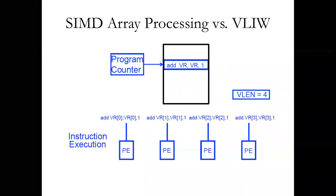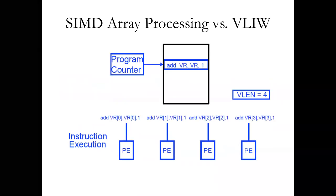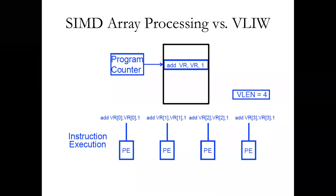Vector processors have an instruction that contains multiple instructions — that's the pipeline we see — and it tells the various execution elements to do that instruction on a set of data. Contrast this to the array processing idea where we have a single instruction sent to all our different execution units and they're operating on different parts of our vector. These are two ways that you might see this happen.